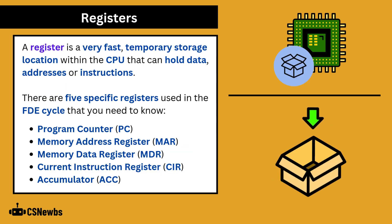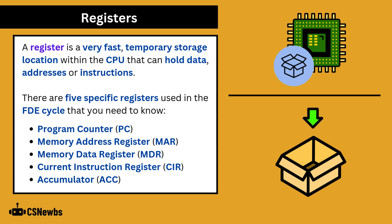A register is a very fast temporary storage location within the CPU that can hold data, addresses, or instructions. There are five specific registers you need to know, each with its own purpose. We will look at what each register stores and its purpose in the next video.